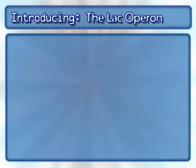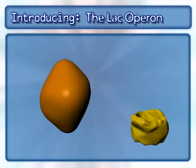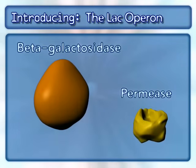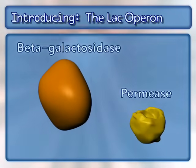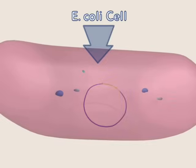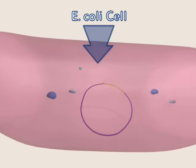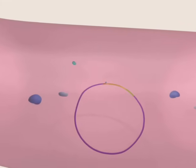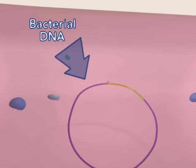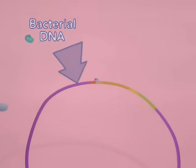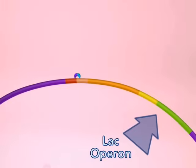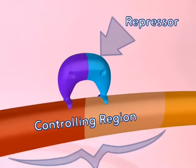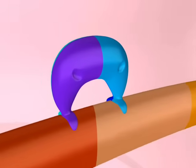This animation will only focus on two of the three proteins encoded by the lac operon: beta-galactosidase and permease. Gene expression can be induced or turned on when a specific inducer molecule appears in a cell. For inducible systems, a repressor molecule prevents gene expression by binding to the upstream controlling region.